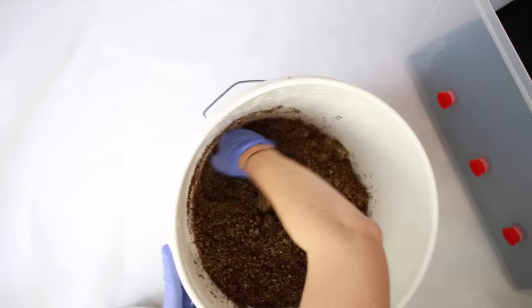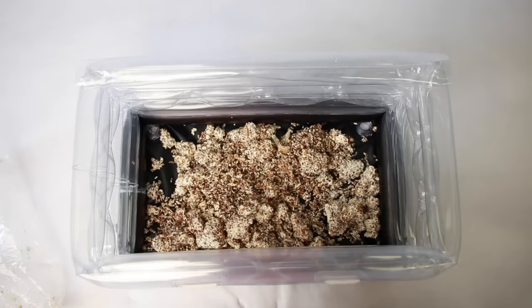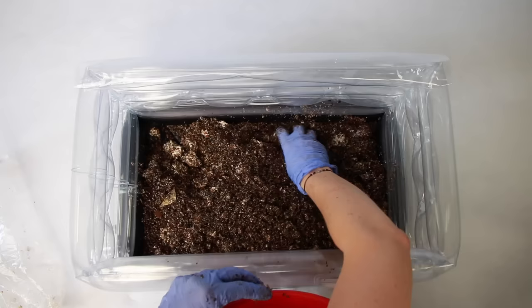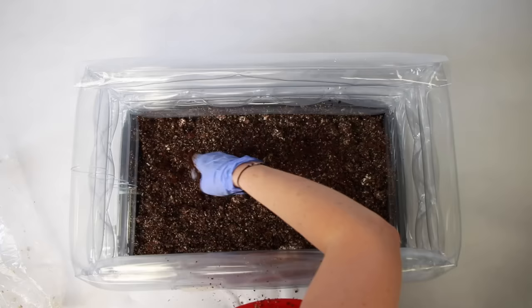Now, let's put our bulk substrate and our spawn into our monotub. First, dump all the spawn into the monotub. I am using a 3 pound spawn bag. Then, hand mix your bulk substrate and put about half of the recipe into the monotub. Then, mix your bulk and your spawn together.